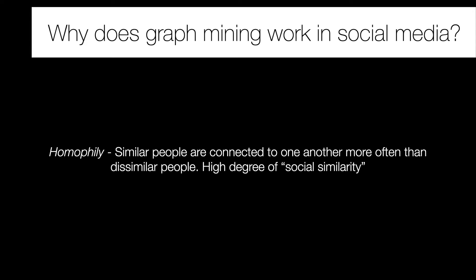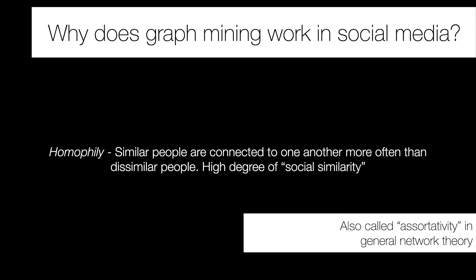An overarching question about graph mining is: how does it work in social media? What makes us able to infer things about graphs just by looking at network structure or adjacent nodes? A core aspect of social media and social network analysis is homophily — the idea that similar people are connected to one another far more often than dissimilar people. In network science more generally, this is known as assortativity.